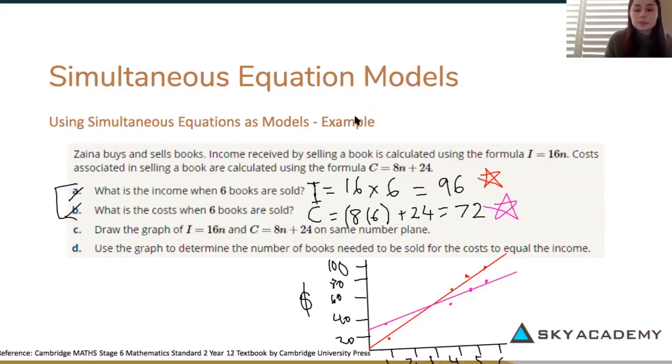D, use the graph to determine the number of books need to be sold for the cost to equal the income. So when cost and income are equal that's just going to be the point of intersection or the simultaneous solution because we know that the point of intersection is when x and y are the same for two lines. And so that would be here at about three. So when three books are sold the cost and the income were the same.